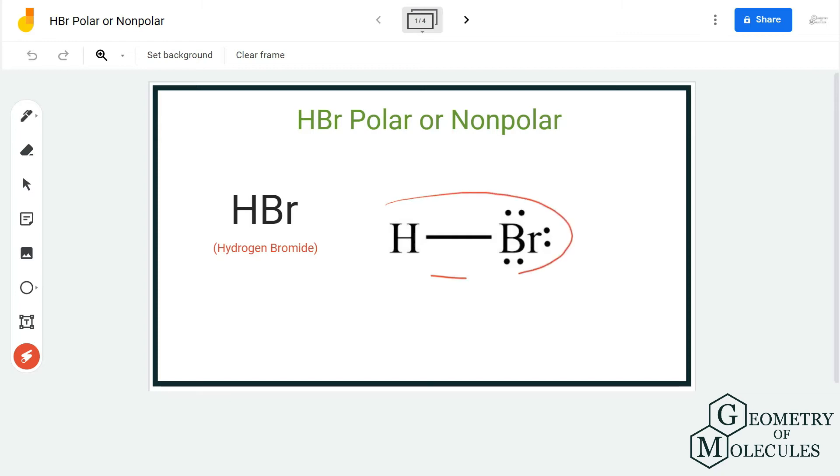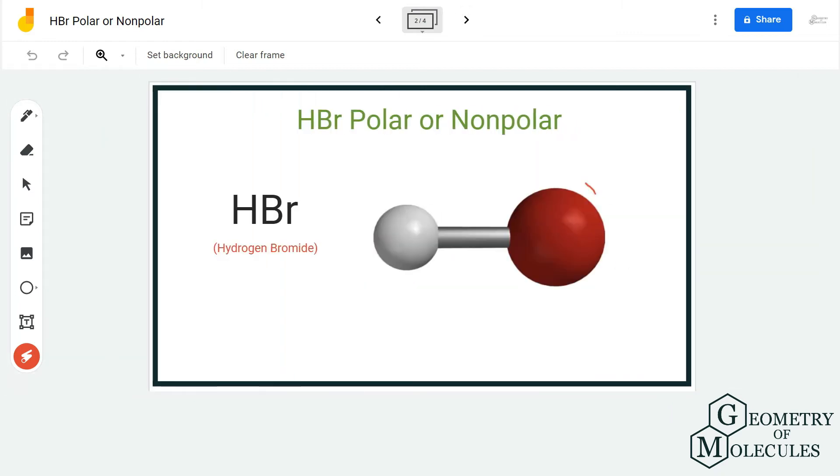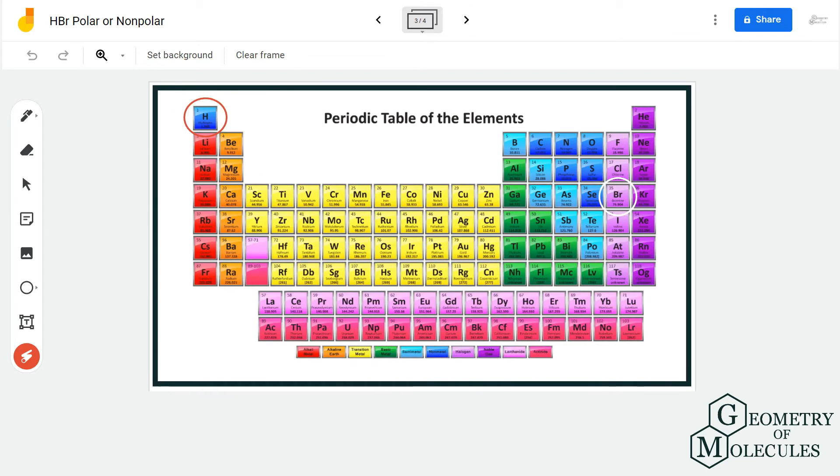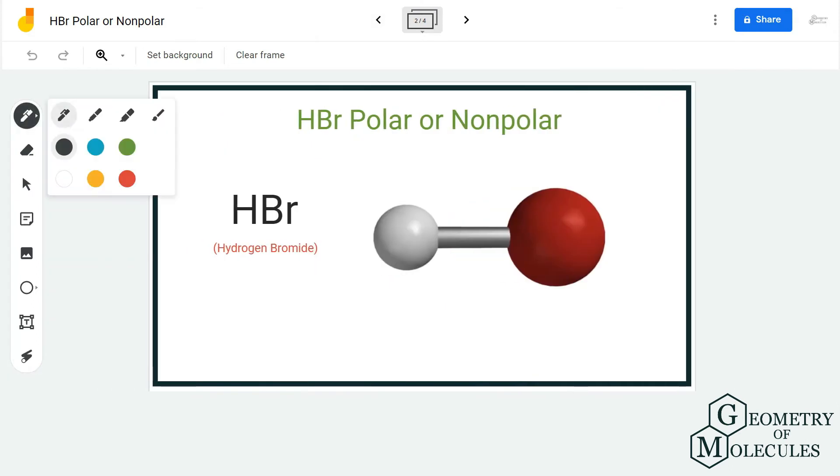Looking at the electronegativities of both these atoms can help us find out if there is a dipole moment in this molecule. Hydrogen is in group 1 and has an electronegativity value of 2.20, and for bromine it is 2.96. Bromine is a halogen and has more electronegativity than hydrogen.